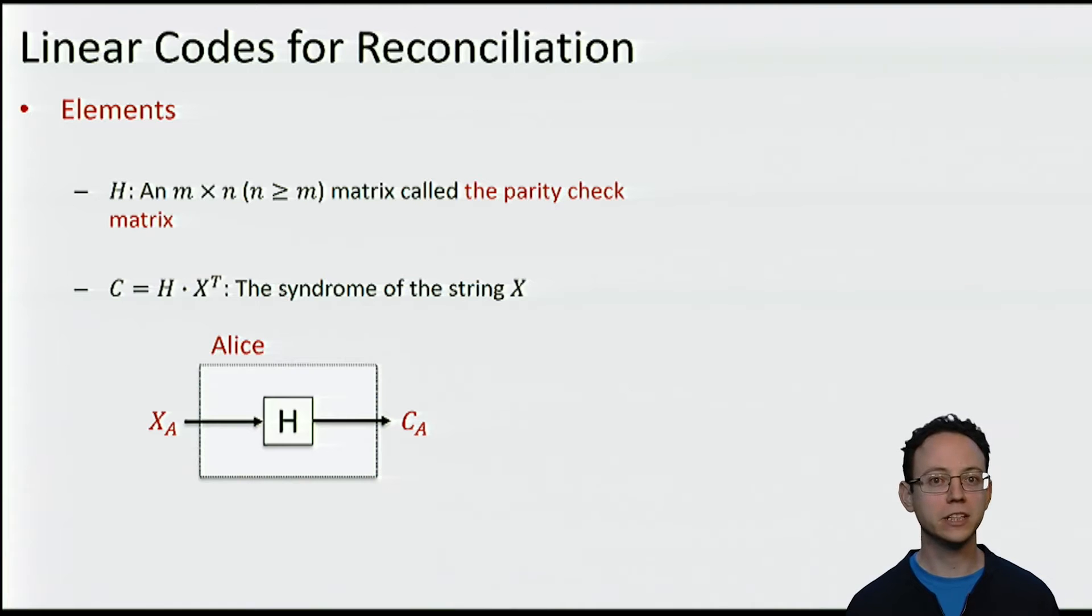The scheme that we will describe is based on linear codes. Let us first review two ideas that we need from linear codes in order to describe this reconciliation scheme. The first element that we need is the parity check matrix. A parity check matrix is just an m by n matrix, in our case with binary entries.